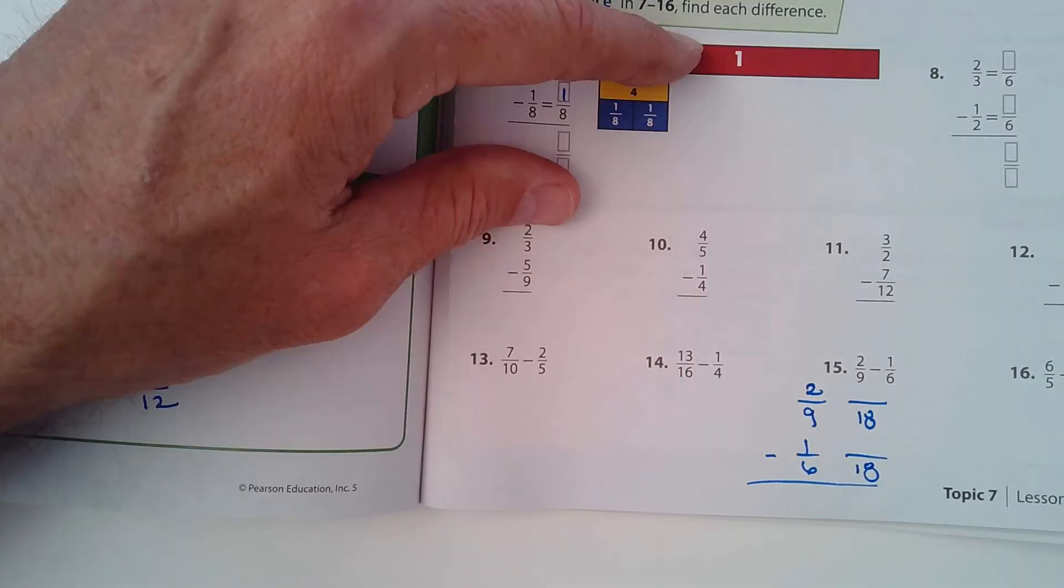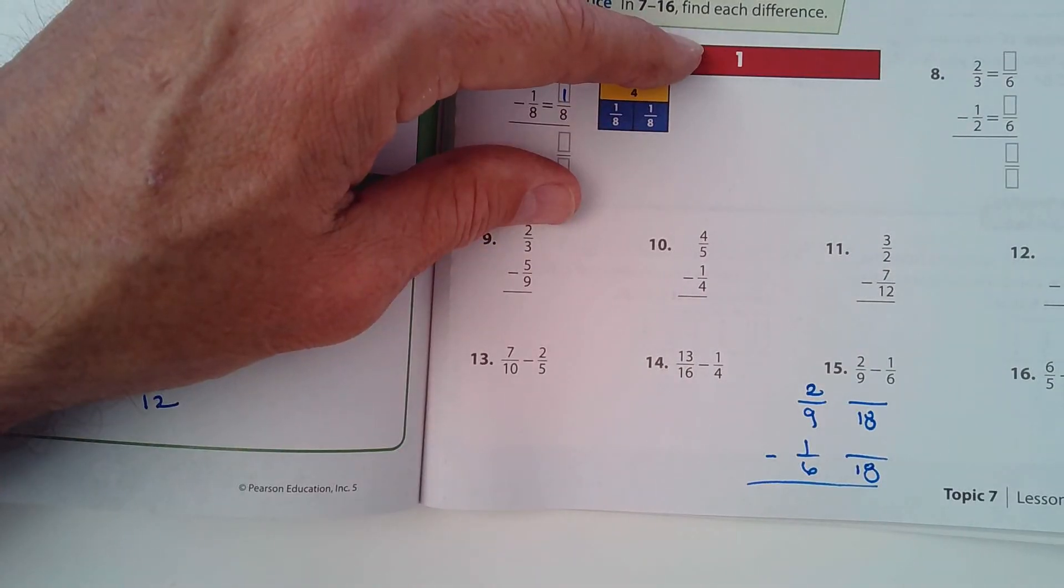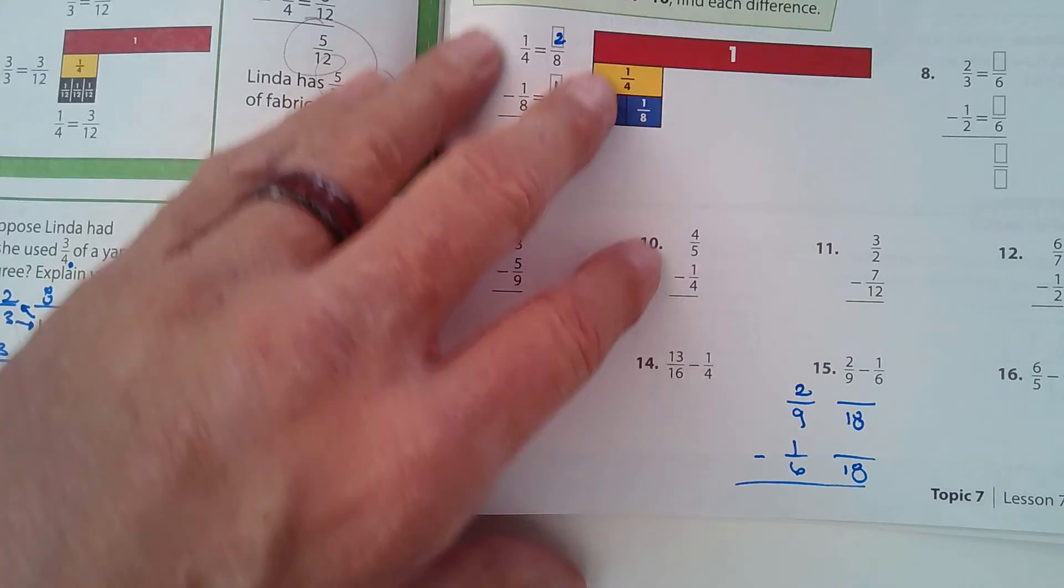Well, six won't fit into nine evenly, but so let's double nine. How about 18? Does six go into 18 evenly? It does. It goes into 18 three times. And nine goes in twice. You guys should be able to do the rest of these, I think, on your own.